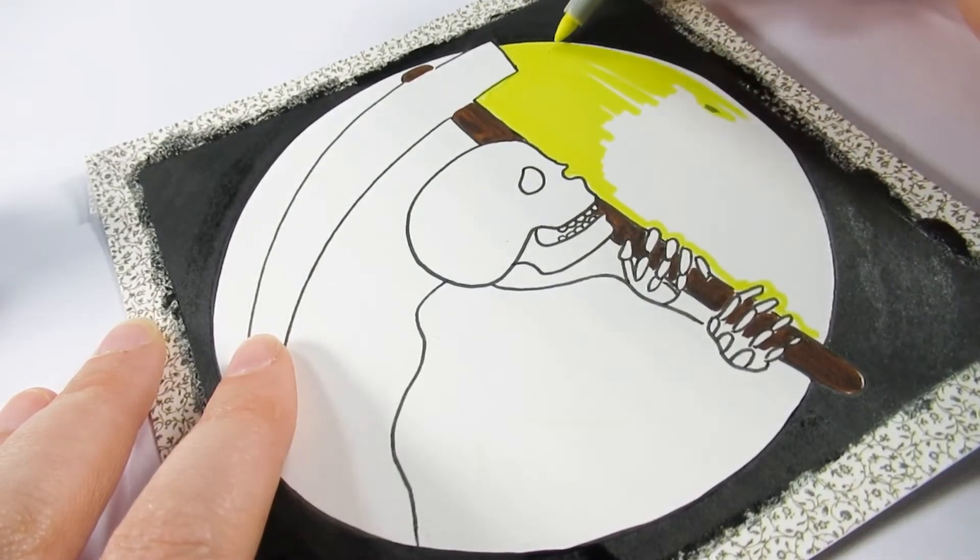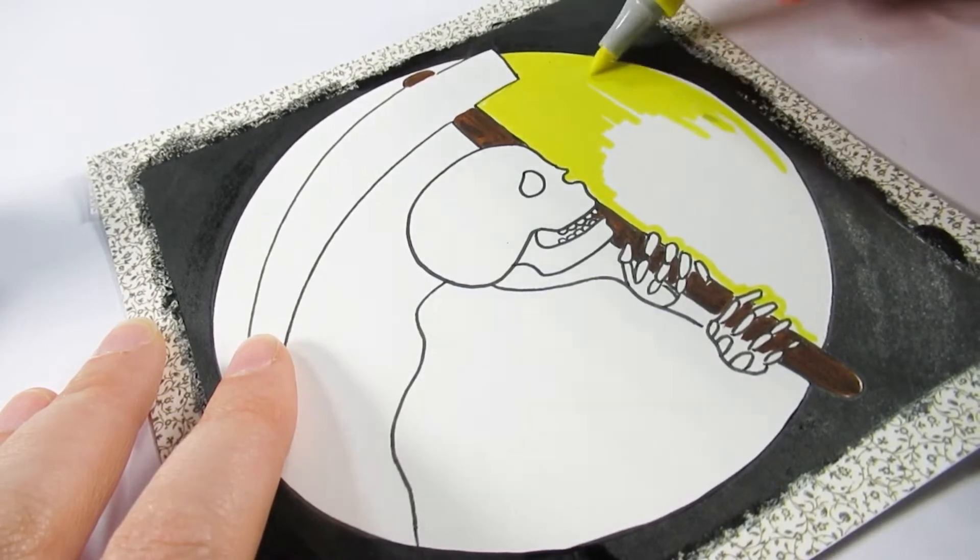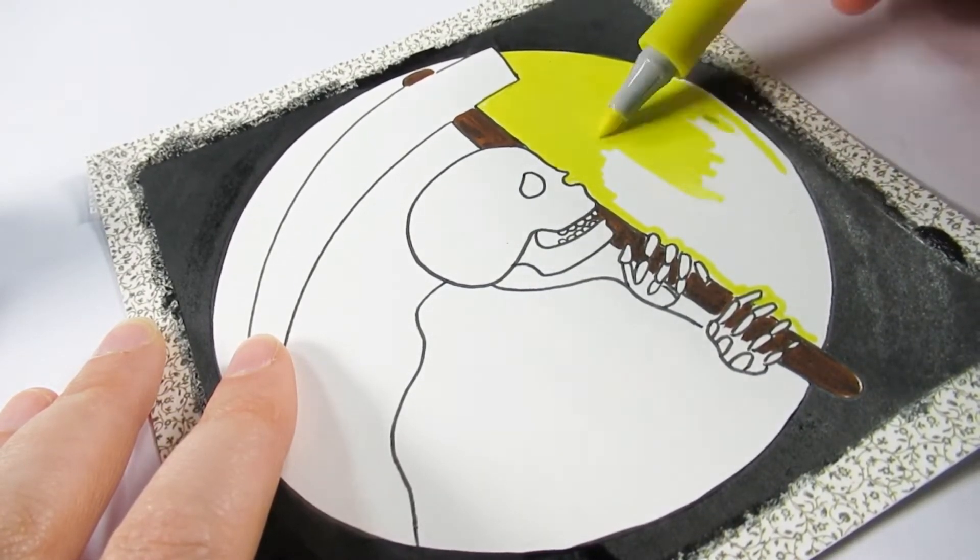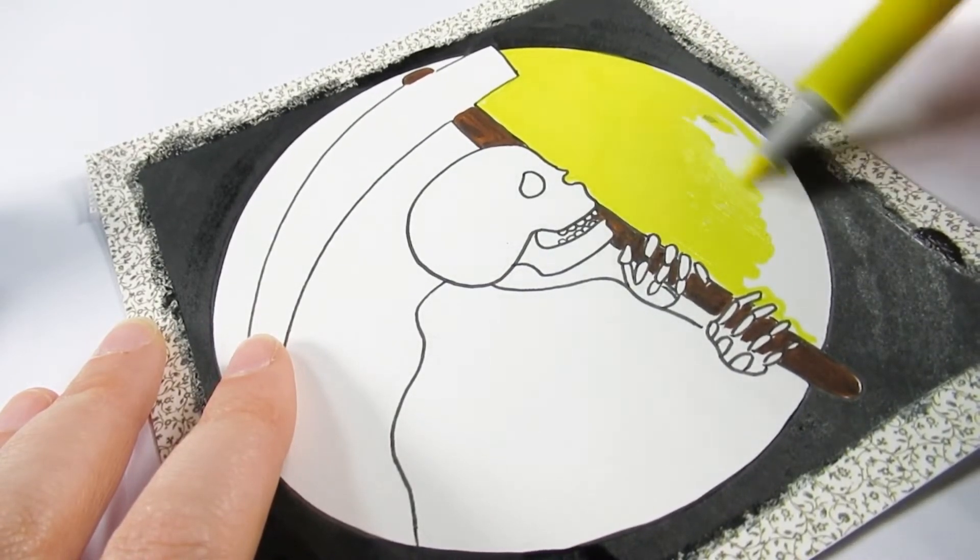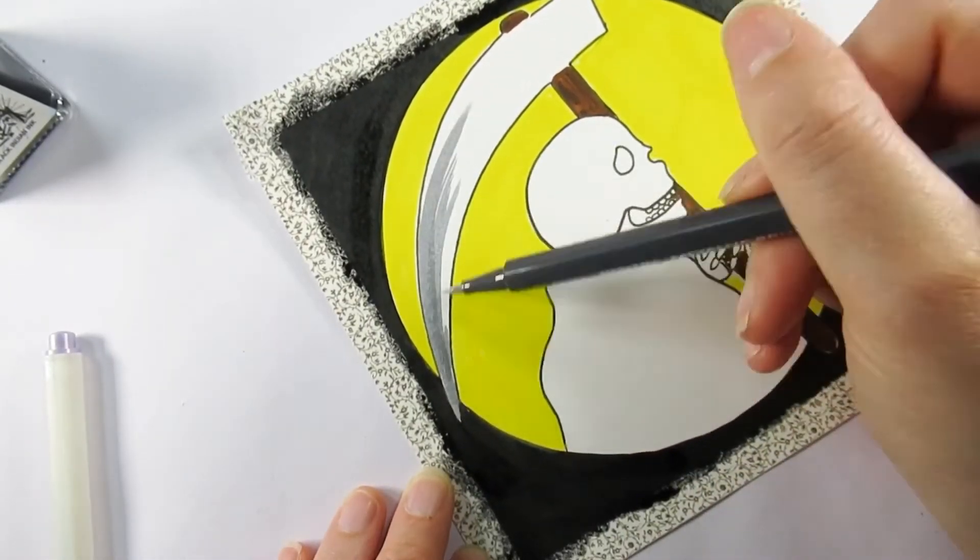Unfortunately I must have gotten a little bit of ink on that circle area and it didn't matter how many times I tried to cover it up, it was having none of it. So it's just got to stay there forever I'm afraid. But I thought adding a yellow background would make the foreground stand out a little bit more.